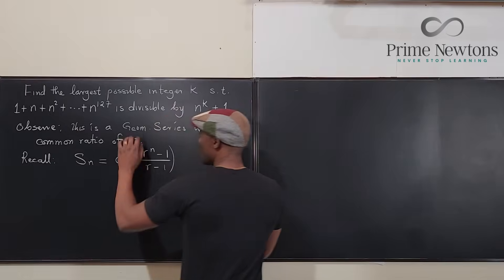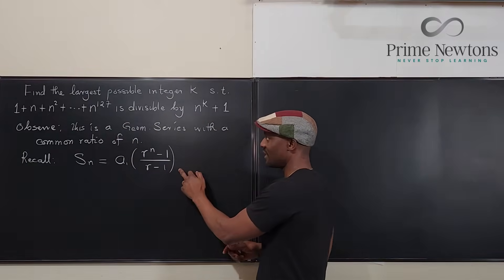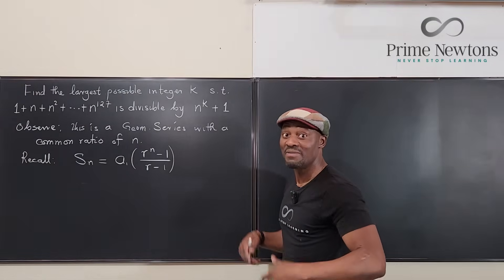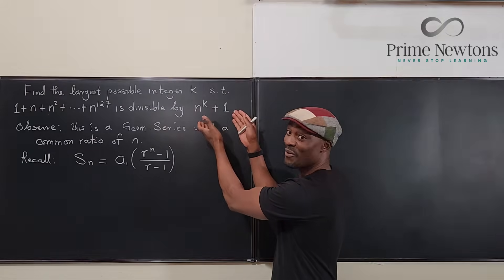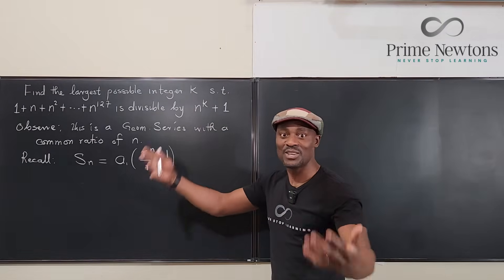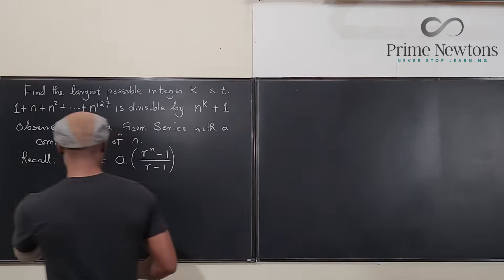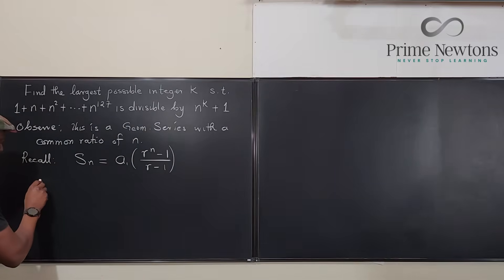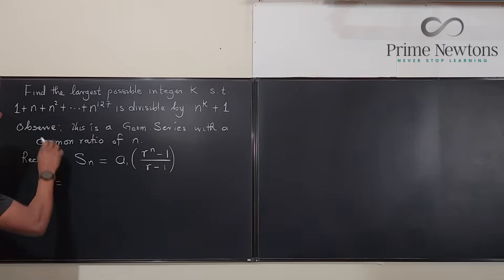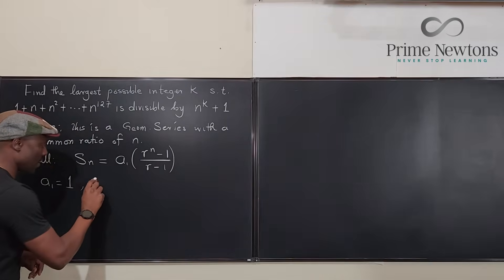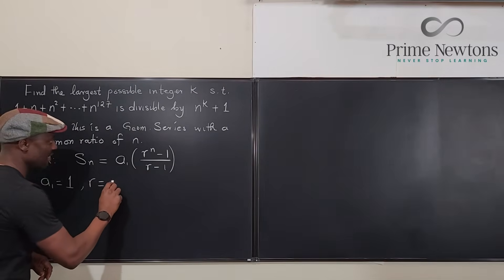Now, once you're able to rewrite this like this, then you can figure out if you can do a division. In fact, the division is now possible because you have an easier polynomial to divide. Let's find all the ingredients. We know from here that a sub 1, the first term, equals 1. What is the common ratio? Our common ratio is n.